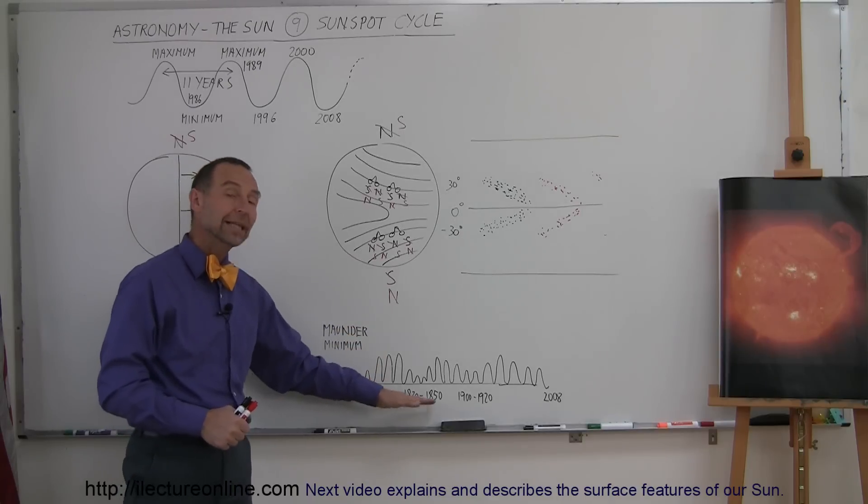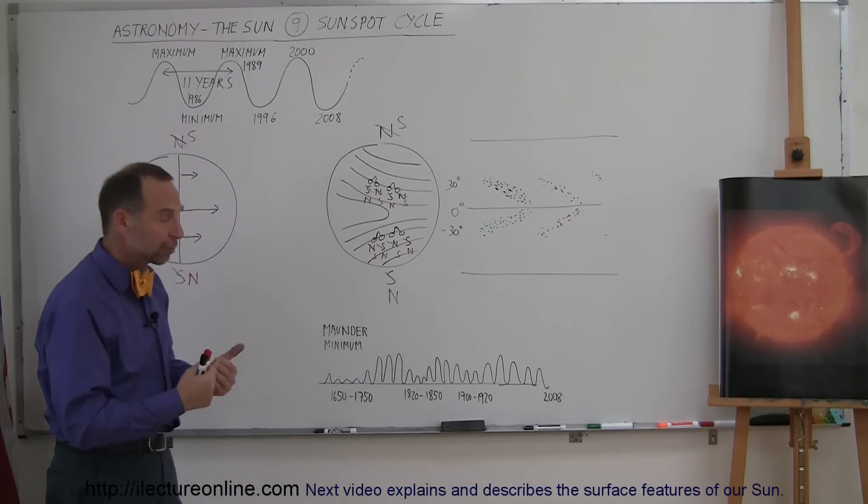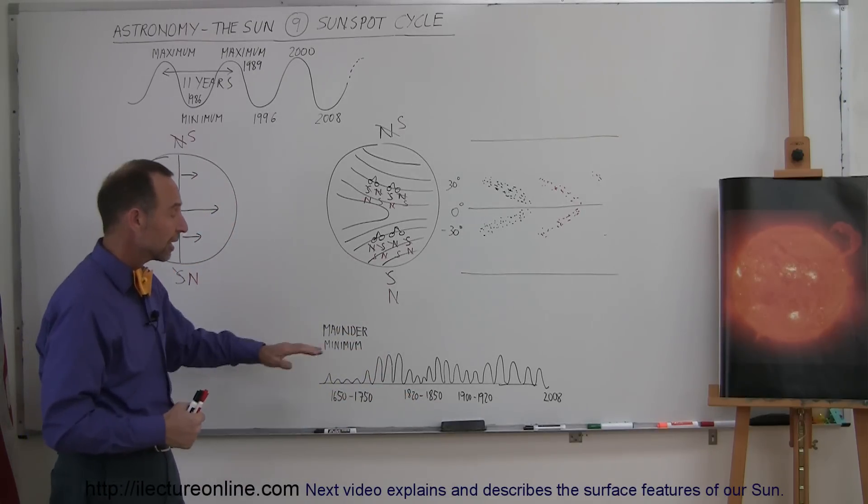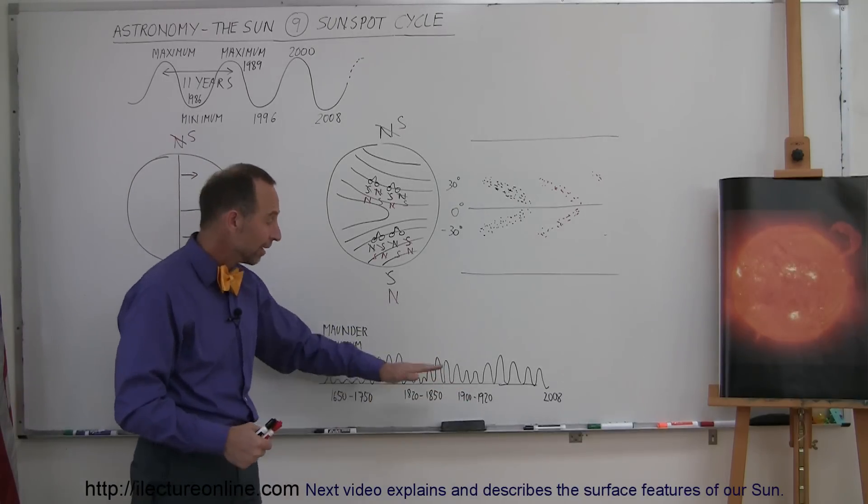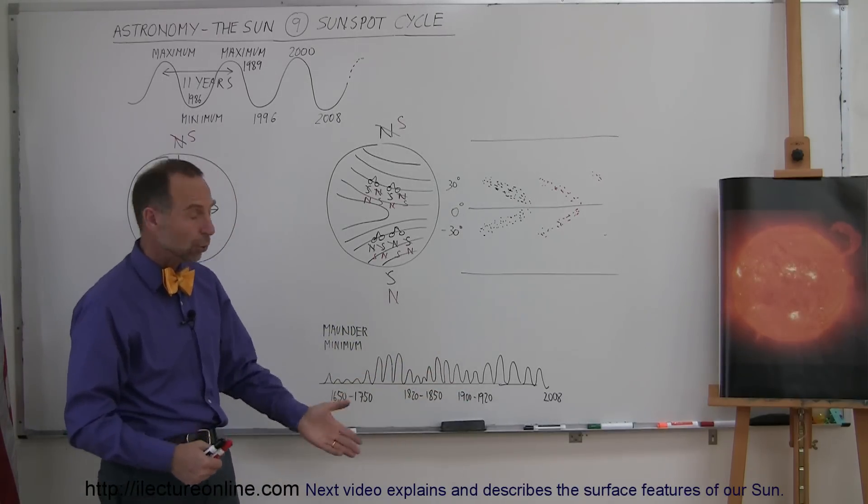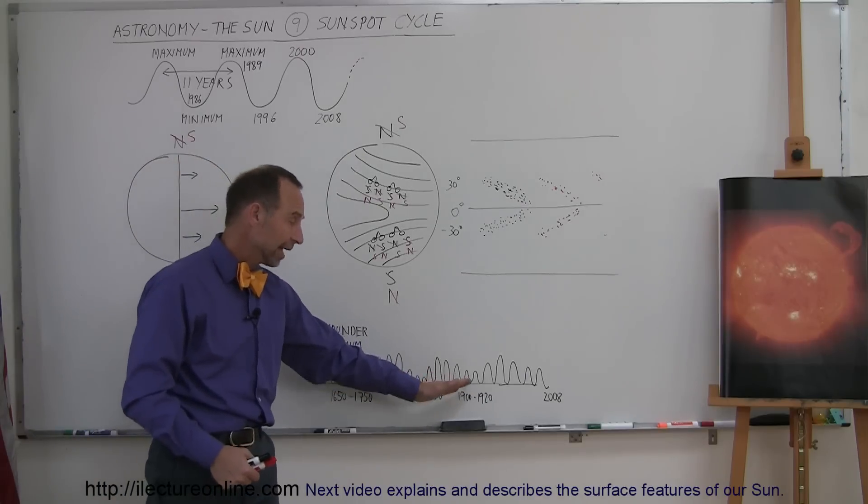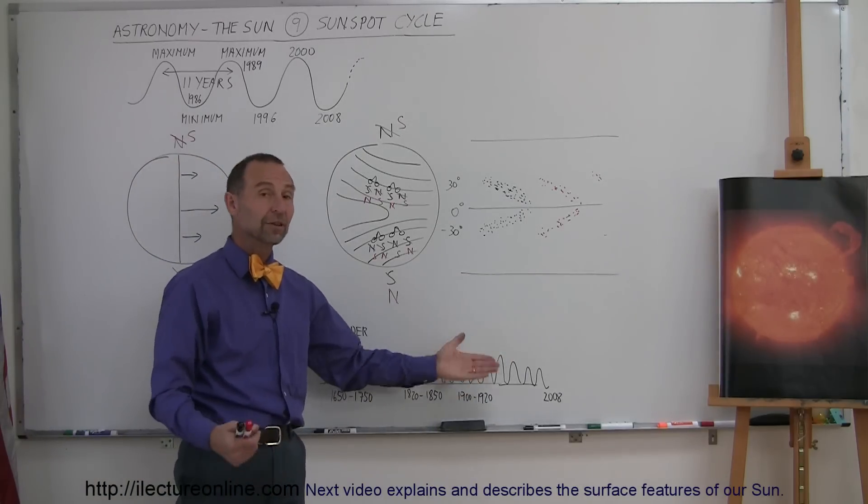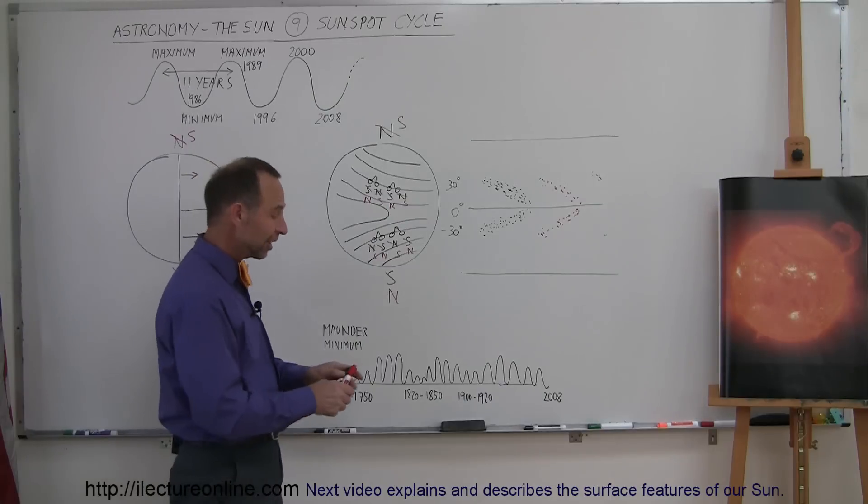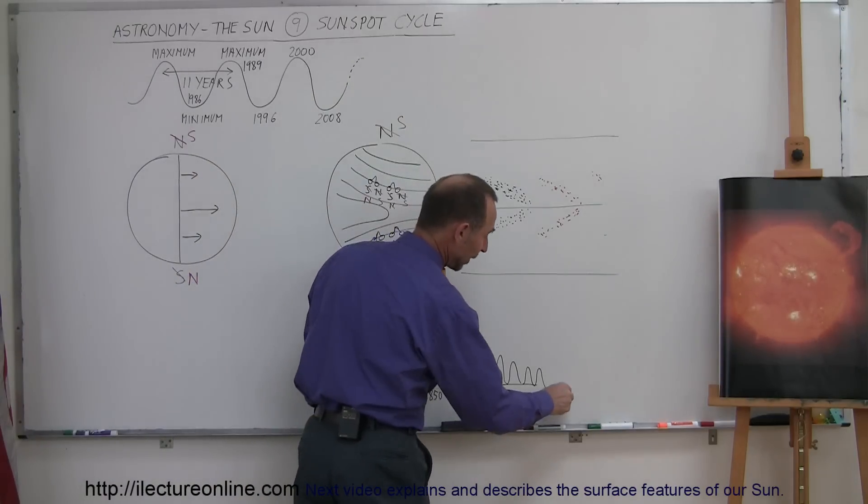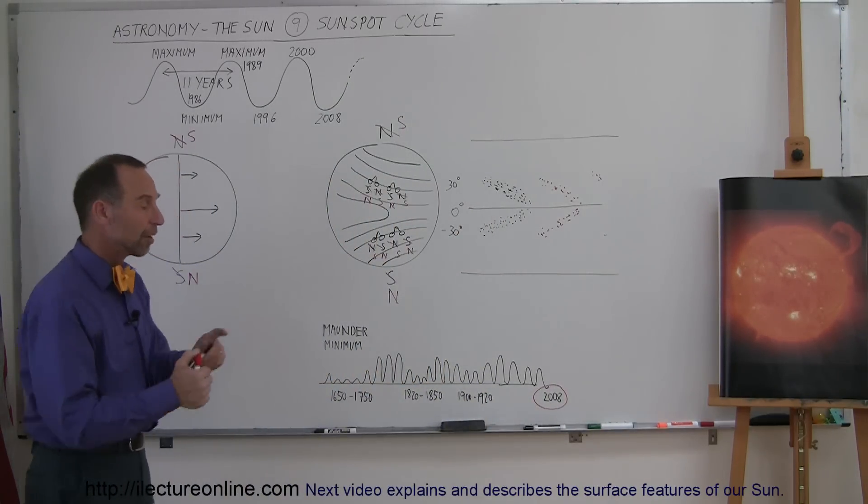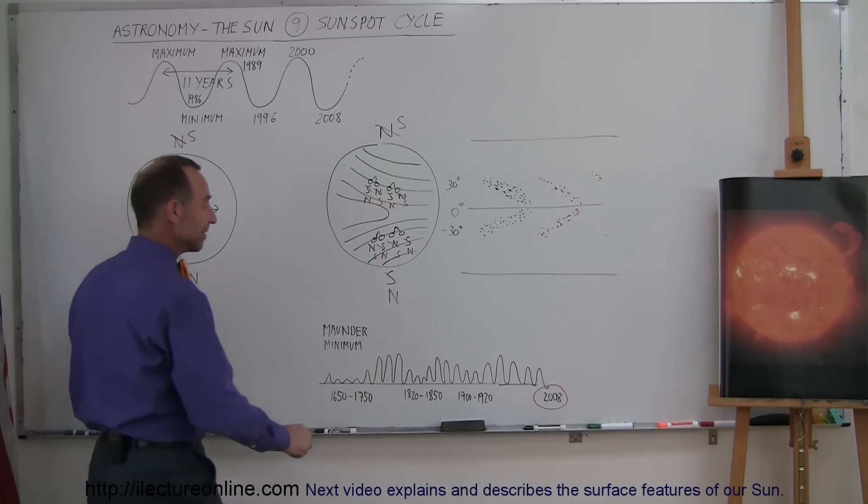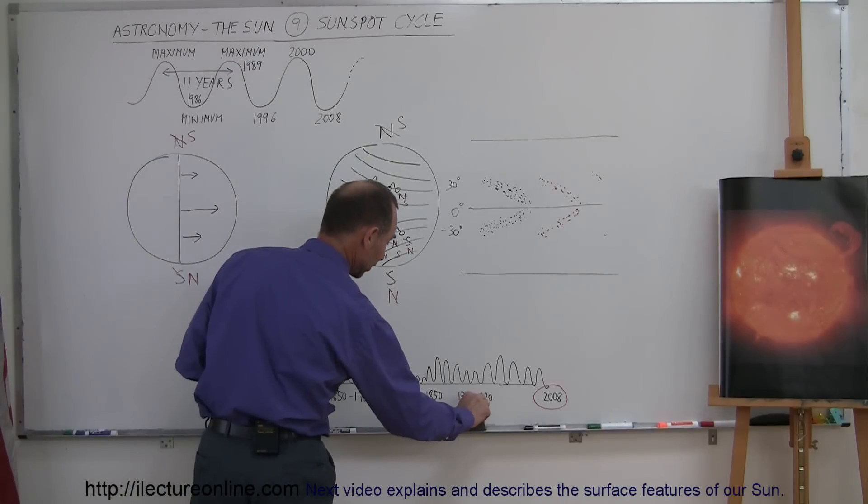And then, between 1820 and 1850, the sunspot maximum had far fewer sunspots in it again. Then it began to increase again. And then in the early part of the 20th century, same thing in 1910, 1920, far fewer sunspots. And then we had a lot of solar activity with lots of sunspots. And what's interesting is, in the minimum of 2008, they saw the fewest sunspots during that period since 1913, which was in this area right here.